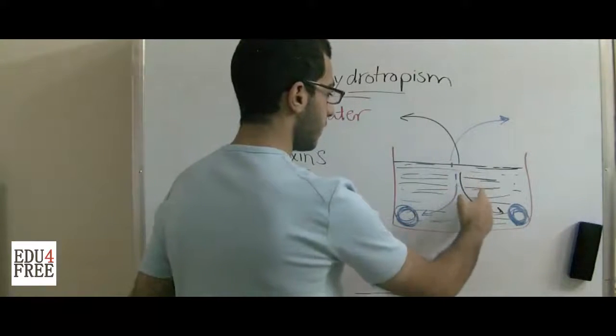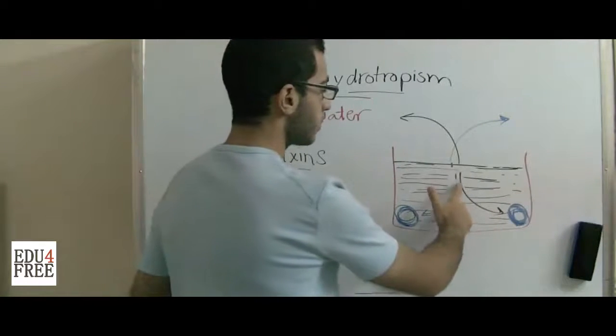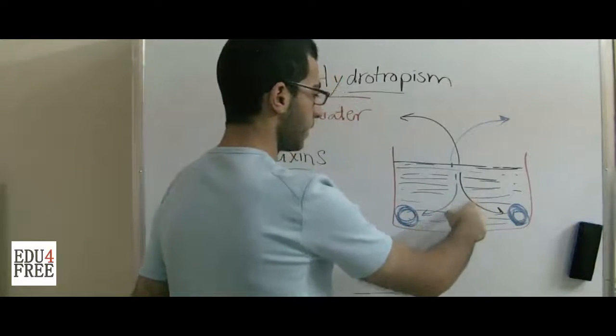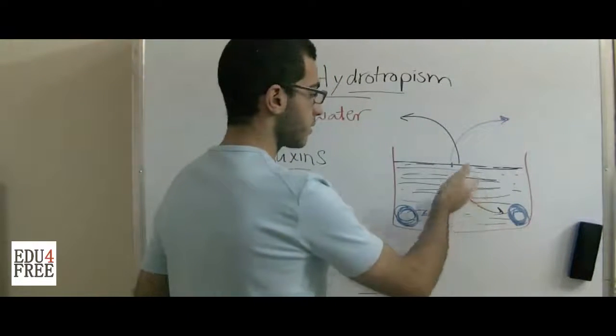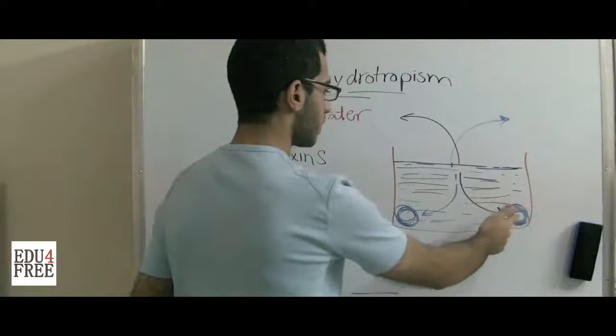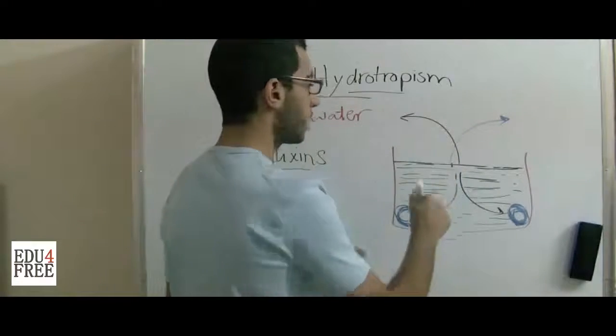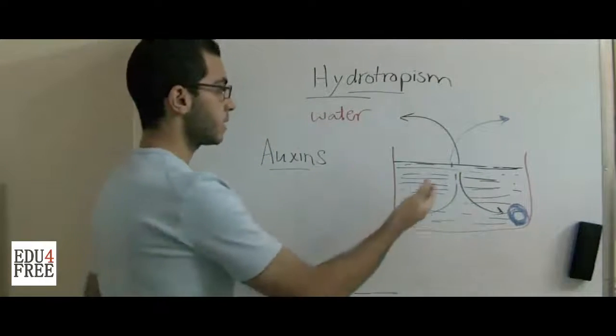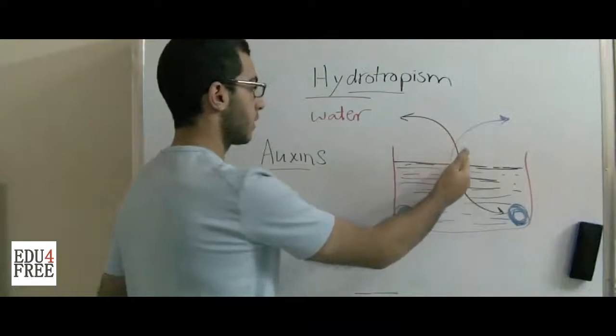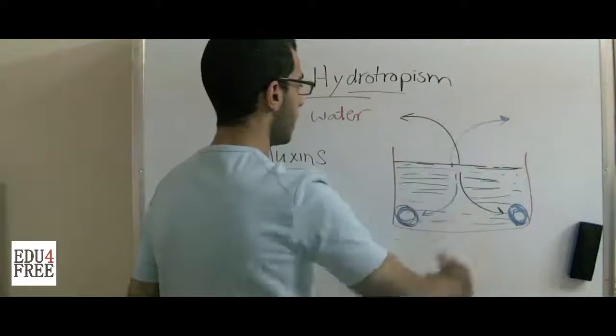Or in this case, the concentration of auxins will be more on that side, so it will decrease the growth of this side and increase the growth of that side so that the curvature takes place towards water. And vice versa in the stem: at the place where the auxins are most concentrated, the growth is induced while it's inhibited on the other side, so the curvature takes this shape or this shape.